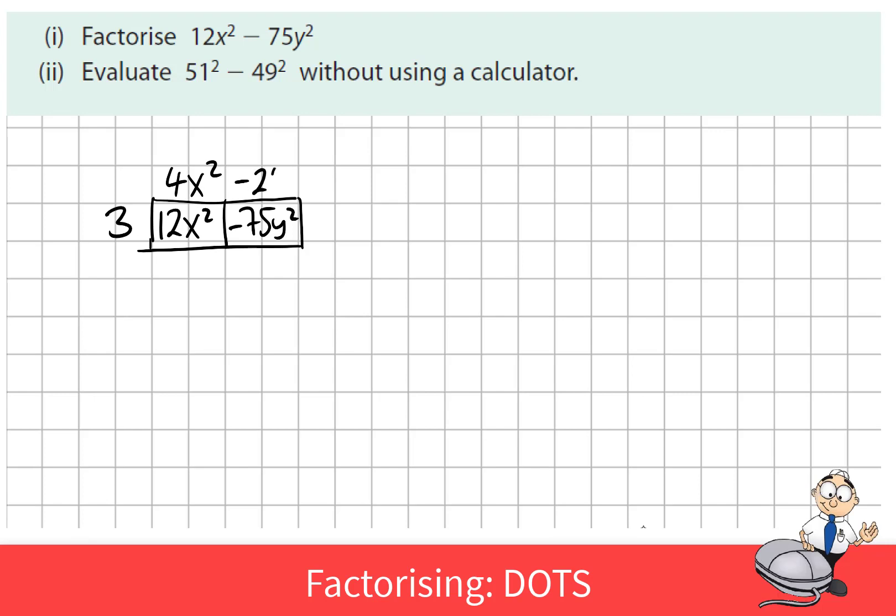So firstly factorizing these, just taking out the highest common factor, 3, we would see that 3 times 4x squared minus 25y squared would be 12x squared minus 75y squared. But when we look at this expression in yellow, we would recognize that this is the difference of two squares.